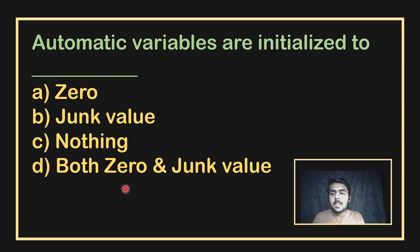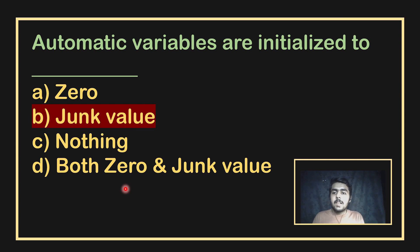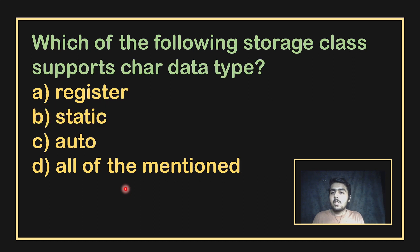If an automatic variable exits the block scope, it is destroyed. Automatic variables, when not specifically initialized, get a junk value by default. However, if the static keyword is used inside a function, then the variable gets a zero value by default. These two points are important to remember.